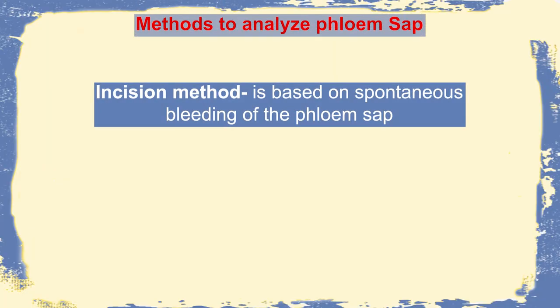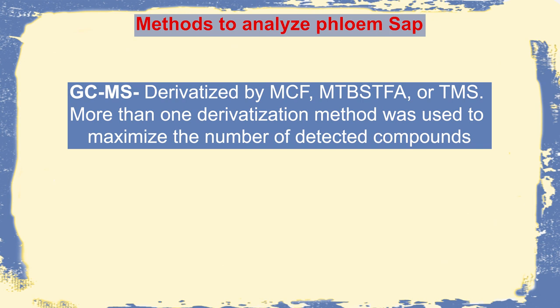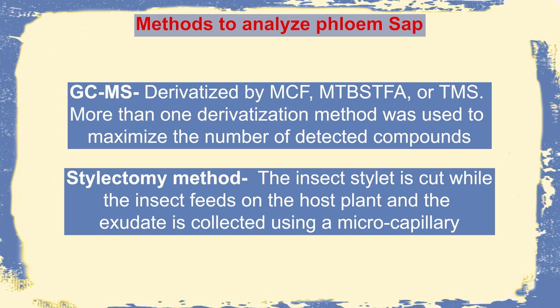There are different methods by which phloem sap can be analyzed. The first is incision: when we give an incision in the phloem, the exudate comes out and can be chemically analyzed. Apart from that, there is EDTA — ethylenediamine tetraacetic acid — a chelating agent that chelates different phloem components for analysis. The third method is GCMS, using a volatile solvent to determine the components. The fourth method is stylectomy: insects normally feed on phloem sap, and if we cut off the stylet, the stylet will contain the exact composition of phloem, which can be taken in a capillary tube and chemically analyzed.